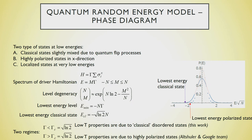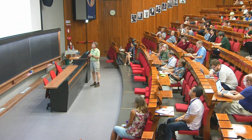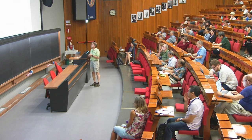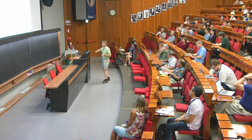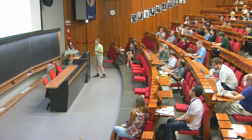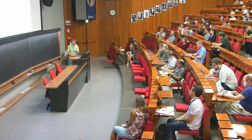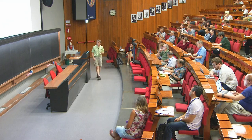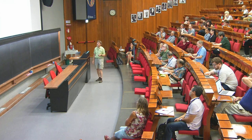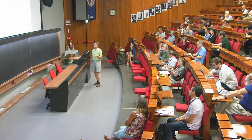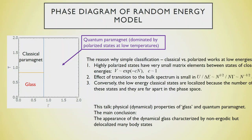Depending on gamma, there are two regimes. I focus on gamma smaller than sqrt(log 2). In the other regime where gamma is large, the lowest energy state is dominated either by the polarized state or by the classical state. This gives a phase diagram known for 25 years: at small gamma there is a classical Derrida glass with a transition from classical paramagnet to classical glass at low temperatures, and at low temperatures there is a transition as a function of gamma between classical-state dominance and polarized-state dominance. That was the whole story for many years.